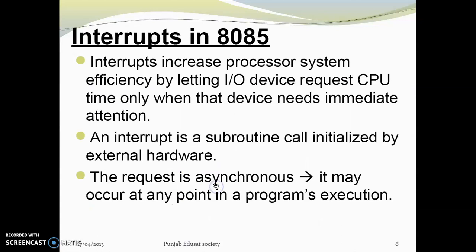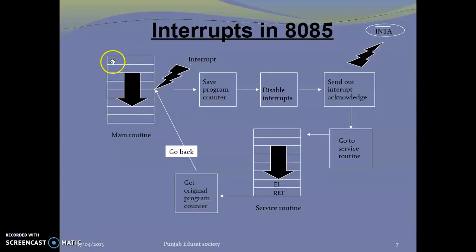The key advantage of interrupts is efficiency. If there is any emergency situation, the interrupt will give the microprocessor immediate attention. An interrupt is a subroutine call initialized by external hardware. An external device will initialize the subroutine, and the request is asynchronous — it can happen at any point in time.